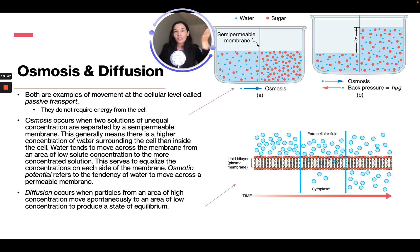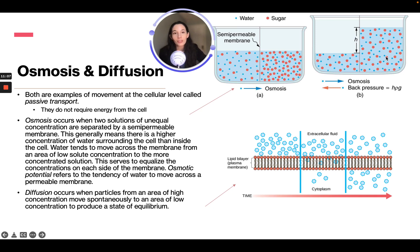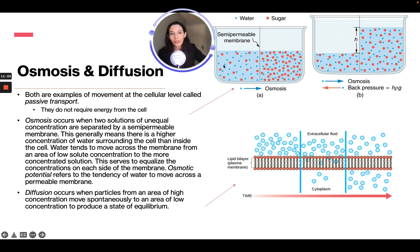With osmosis, if one side has a lot of particles that cannot move through the semi-permeable membrane, then water will move so that both sides become equal. The water moves to equalize the concentration of particles per unit of water — so while there may be more water on one side, the concentration of particles per unit of water is the same on both sides.